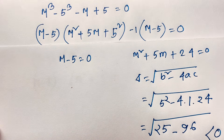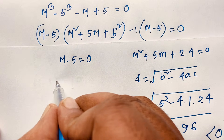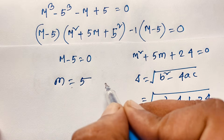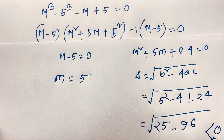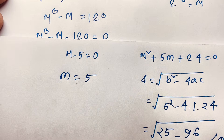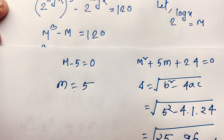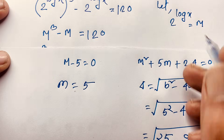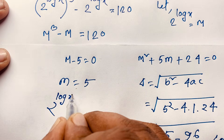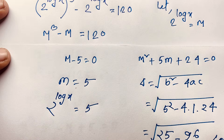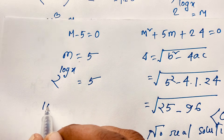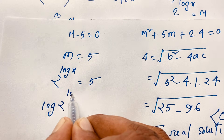From Case 1, m minus 5 equals 0 gives m equals 5. Recalling that m equals 2 to the power log x, we have 2 to the power log x equals 5. Taking log of both sides: log(2 to the power log x) equals log 5.